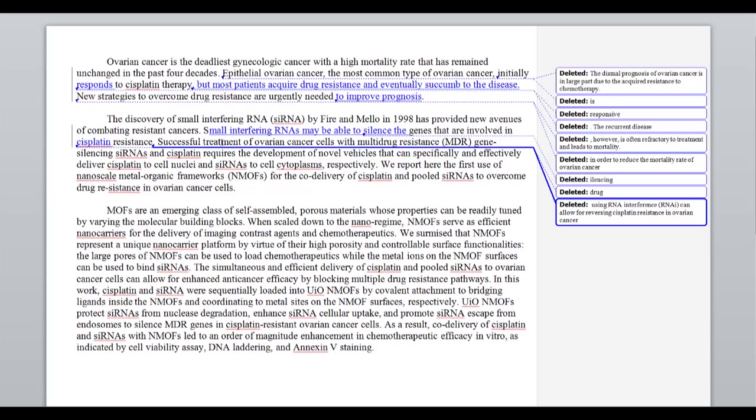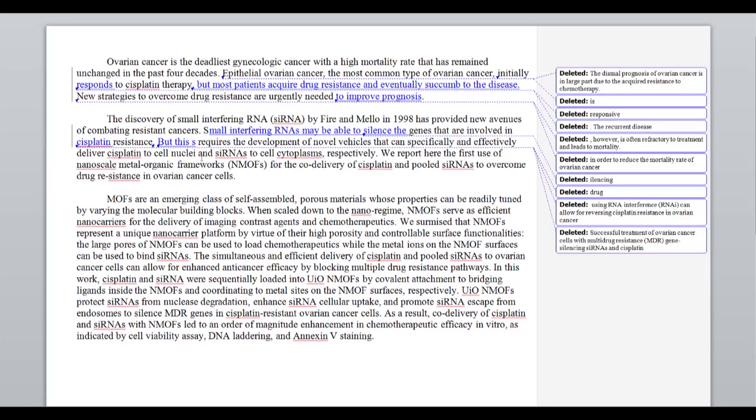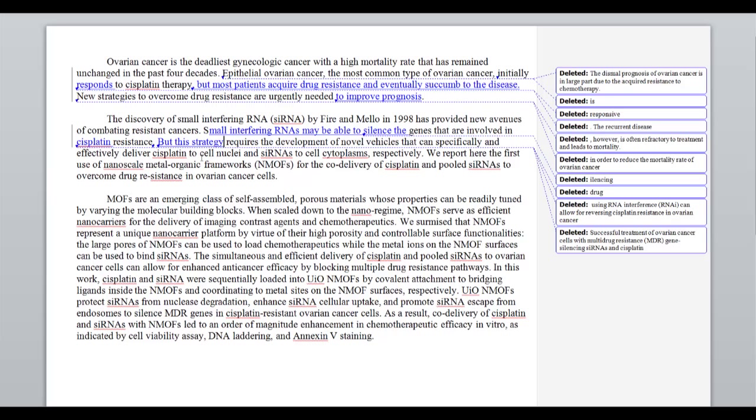Next, we get successful treatment of ovarian cancer cells with multidrug resistance gene silencing siRNAs. Well, that's just a repeat of what we just described. So I don't think we need any of that. What's important here is that in order for this to work, we need these novel vehicles for carrying these drugs. So I think we can just say, but this strategy, in order for this to work, this strategy requires the development of novel vehicles that can specifically and effectively deliver cisplatin to cell nuclei and siRNAs to cell cytoplasms respectively. Now, I am not entirely sure why the siRNAs need to be in the cytoplasm to block mRNAs. I'm not entirely sure why the cisplatin is being targeted to the cell nuclei. I feel like the reader here probably needs just a little bit more information. Maybe just give the reader a quick taste of why those things have to be targeted to those specific locations.